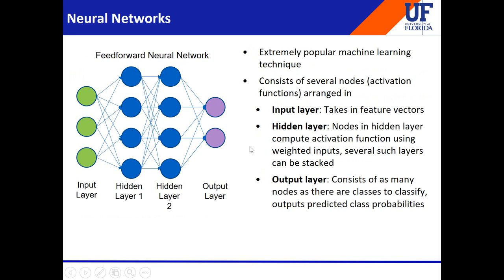The other classifier we used was neural networks, which are an extremely popular machine learning technique. In our case, we used a feed-forward neural network, meaning there are no feedback loops. The neural network consists of several nodes arranged in an input layer, hidden layers, and an output layer. The input layer takes in the feature vectors, the hidden layers compute the activation function using a weighted sum of inputs, and the output layer has as many nodes as there are genres to classify.